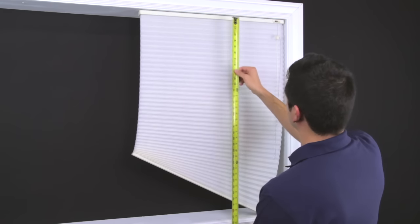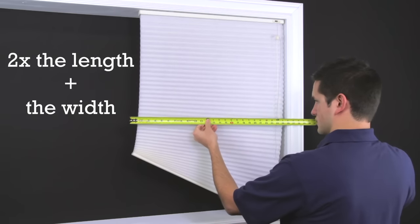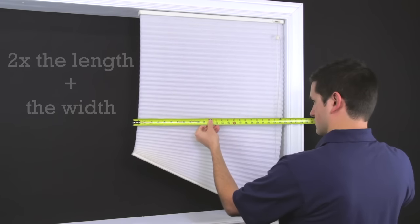To determine the length of each string needed, measure the length and width of the shade. Twice the length plus the width is the formula used to ensure proper string length.